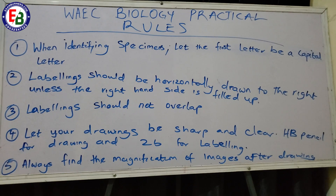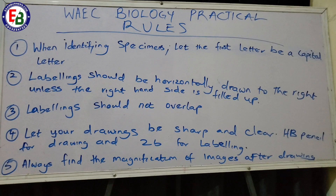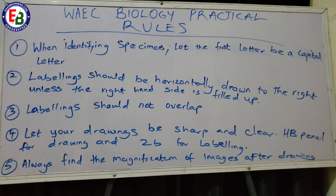Let me explain magnification. Just as in physics, in biology you are given physical specimens in the exam. Use your ruler to measure the length of the specimen, then measure the length of your drawing, and use those values to calculate the magnification. Magnification equals height of the image divided by height of the object. The image is what you drew in your answer booklet; the object is the physical specimen given to you.